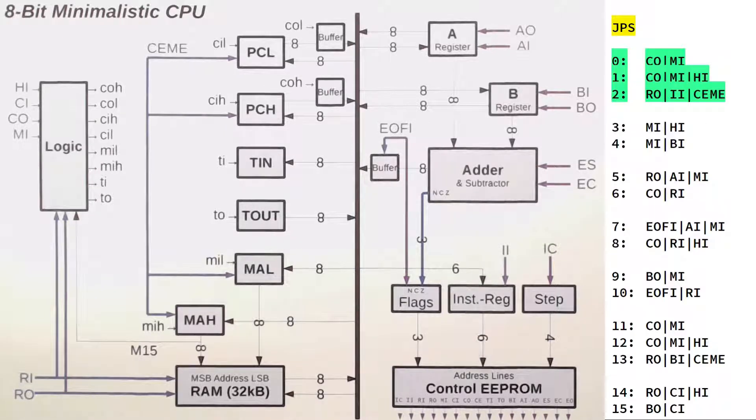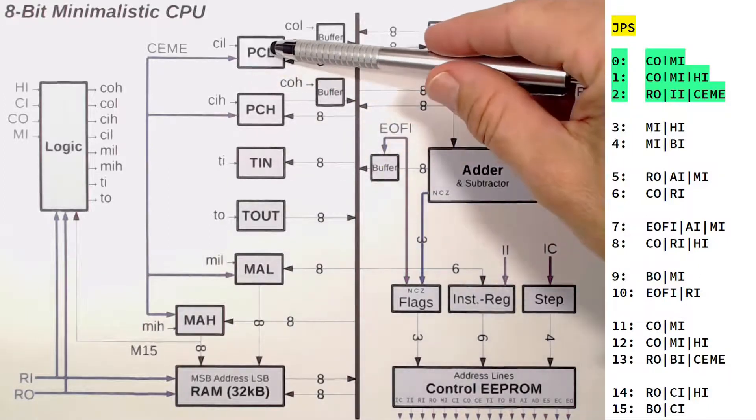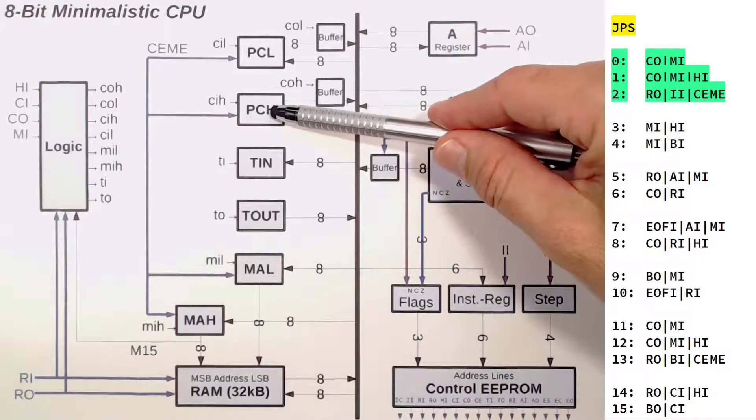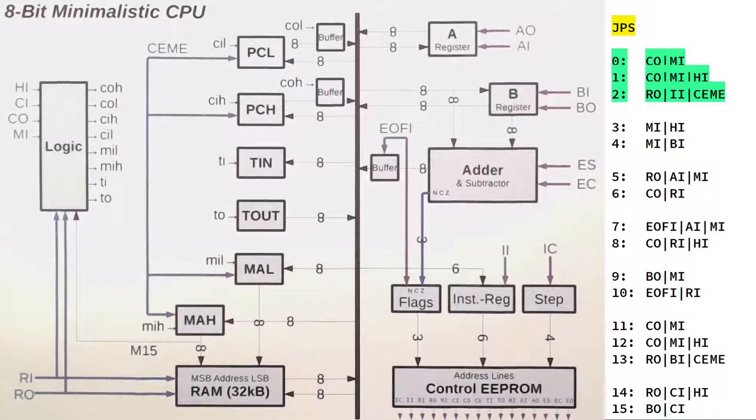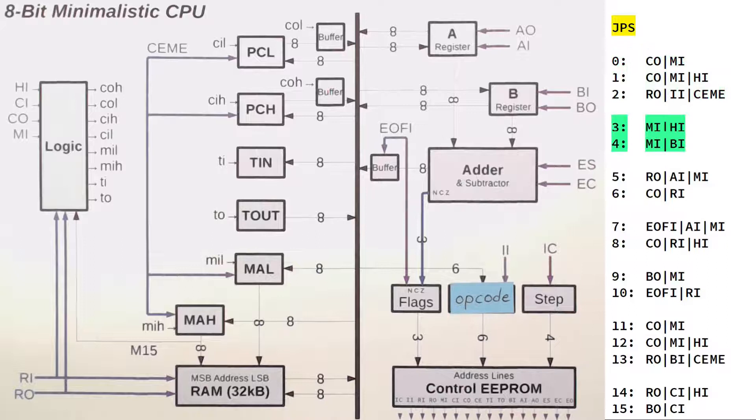We start with JPS for jump to subroutine. My plan here is to store the current program counter, both LSB and MSB, on the stack before we jump to the subroutine address following the JPS opcode. This will allow us to find our way back later. The first three steps I've marked in green just fetch the opcode from memory.